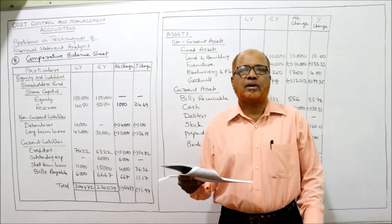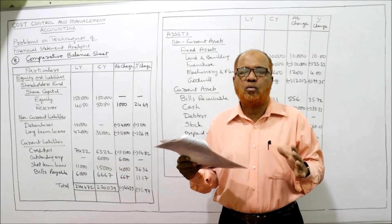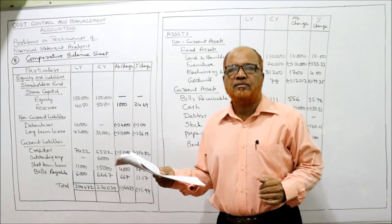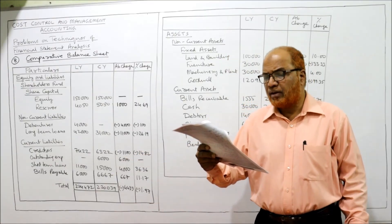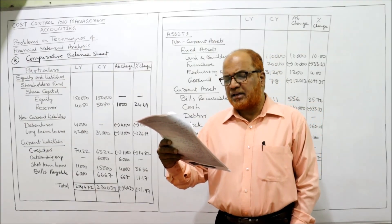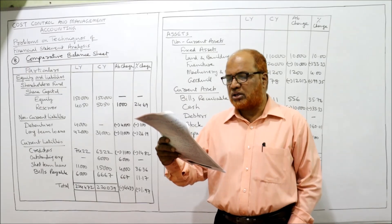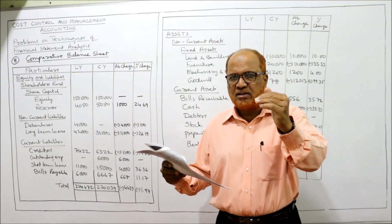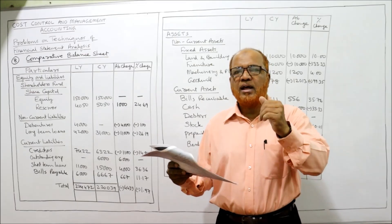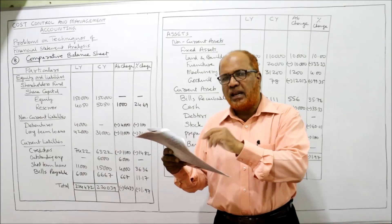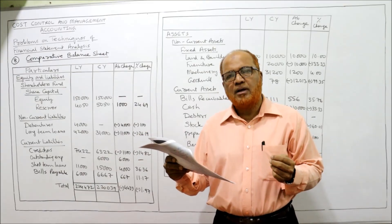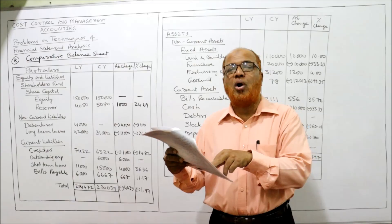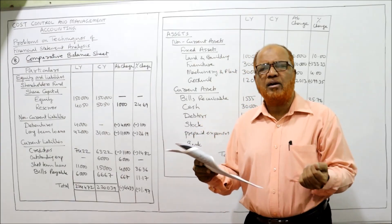In the problem the balance sheet is given in a horizontal form, but nowadays the balance sheet is presented in vertical form — statement form. I have prepared the comparative statement in vertical form. On the liability side we have equity, reserves, bills payable, creditors, debentures, outstanding expenses, long-term loans, and short-term loans. We marshal all these items into three categories: shareholders' fund, non-current liabilities, and current liabilities. Equity and reserves come under shareholders' fund. Debentures and long-term loans go under non-current liabilities.